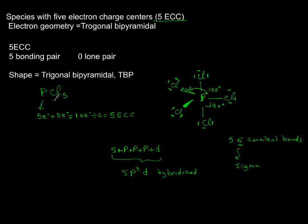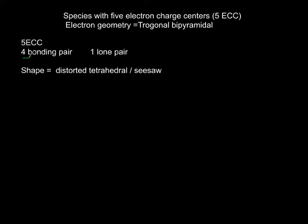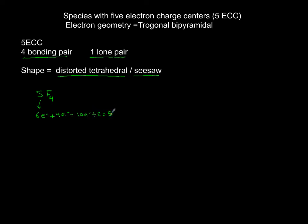Now consider another species with five electron charge centers but with one lone pair and four bonding pairs. Under the same electron geometry, having one lone pair changes the shape — it is called distorted tetrahedral, or seesaw, like a seesaw playground equipment. The example is sulfur tetrafluoride, SF4. Sulfur is group 6 with six valence electrons, plus four electrons shared from fluorines, giving ten electrons total. Divide by two: still five electron charge centers — expanded octet.